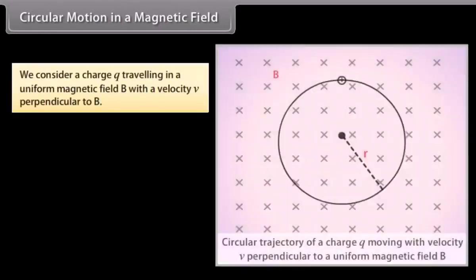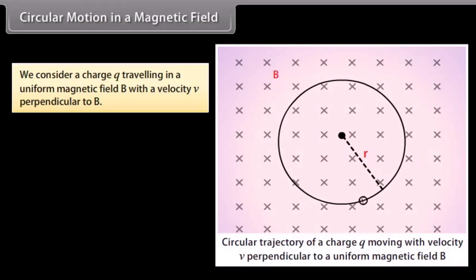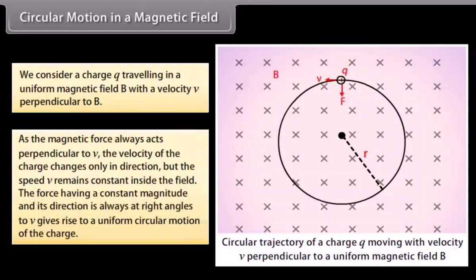Circular motion in a magnetic field: We consider a charge Q travelling in a uniform magnetic field B with a velocity V perpendicular to B. As the magnetic force always acts perpendicular to V, the velocity of the charge changes only in direction but the speed V remains constant. The force having a constant magnitude and always directed at right angles to V gives rise to uniform circular motion.